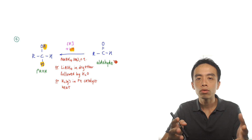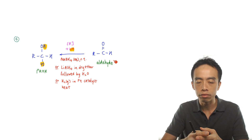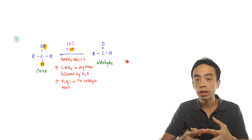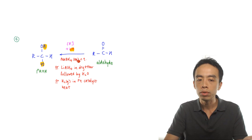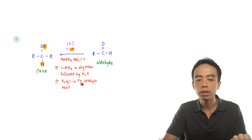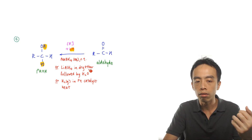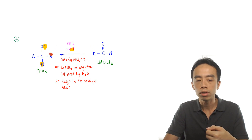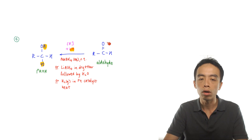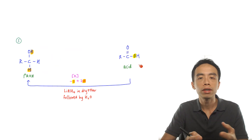Reaction 4 is the reduction of aldehyde to form primary alcohol. Aldehydes are quite easy to reduce, so we can use a number of reducing agents: NaBH₄ in aqueous solution at room temperature, or LiAlH₄ in dry ether followed by water at room temperature, or H₂ with a platinum catalyst under heat. This is the reverse of oxidation — we add a hydrogen to carbon and a hydrogen to oxygen to form the primary alcohol. Adding hydrogen is considered reduction.